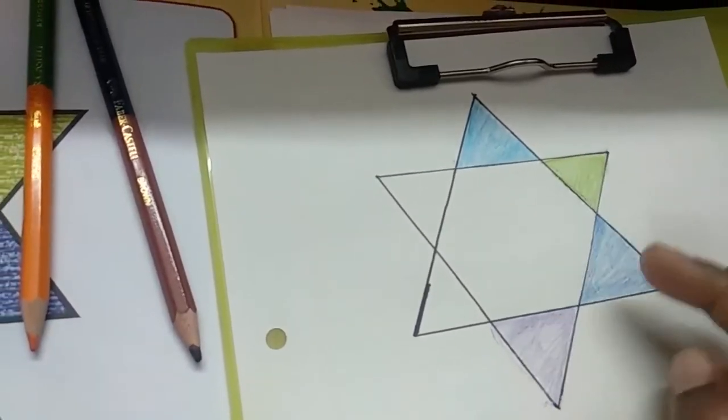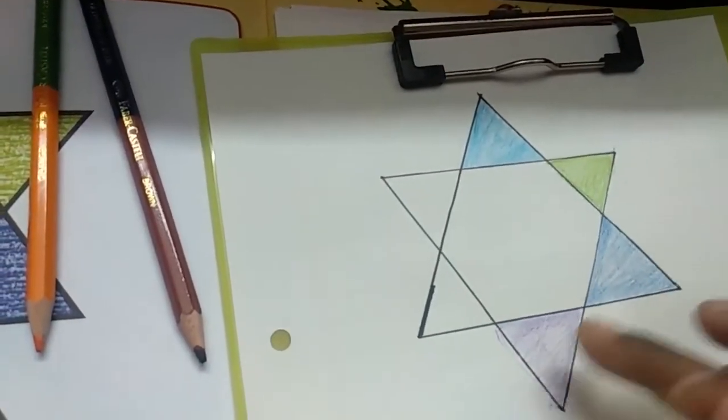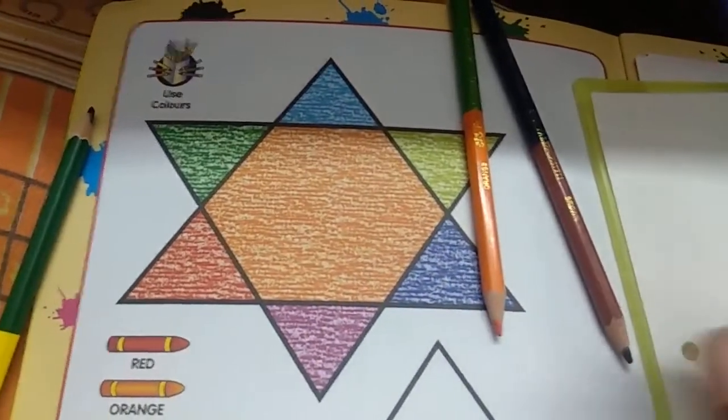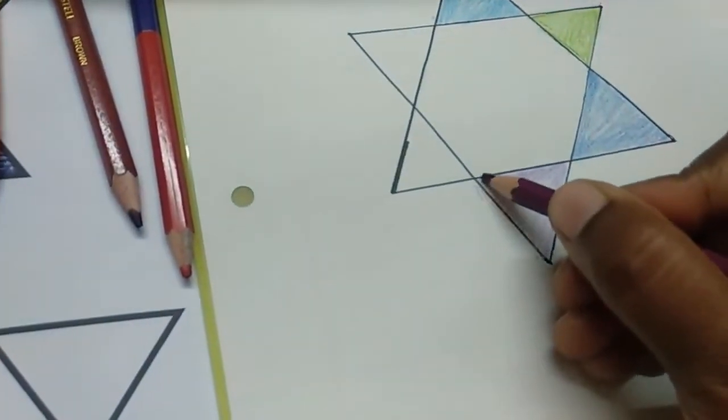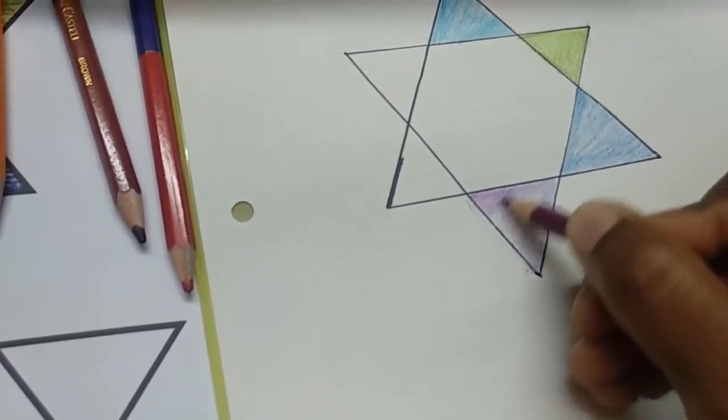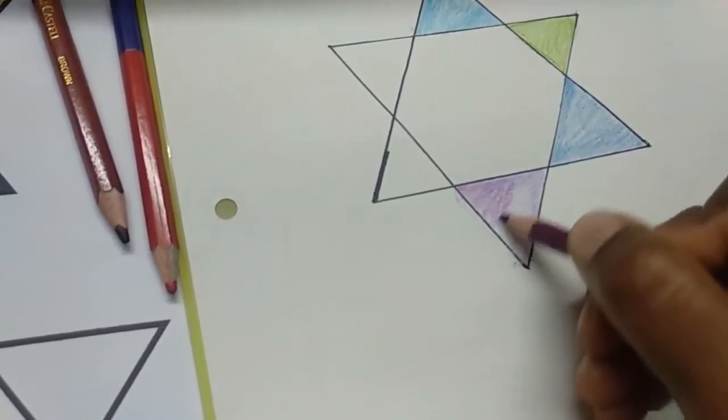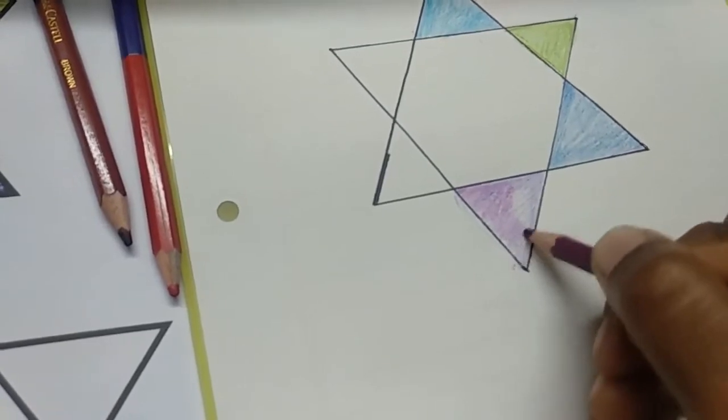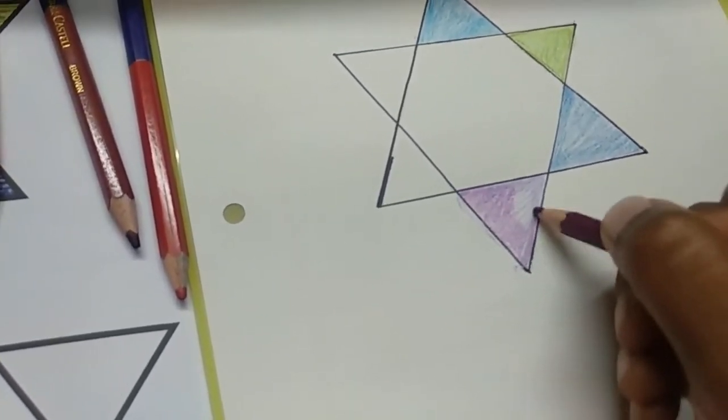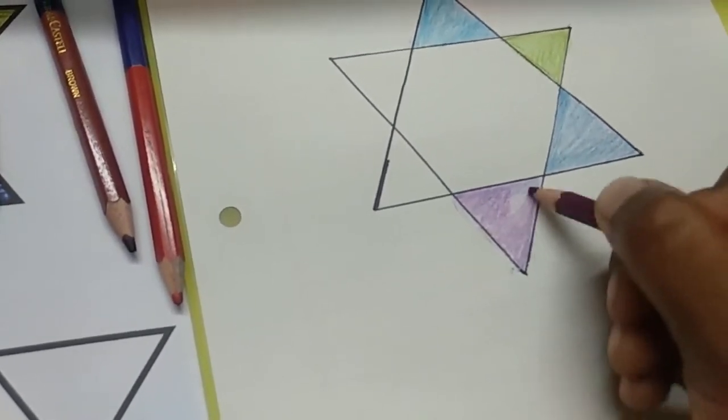So children, suppose you are not getting the perfect color. Like this here we are not getting the exact color, so we can mix the color. This color we can mix to get our complete color. But in your crayon colors you can get the proper color, so you don't need to mix any color. But here, as I am using the pencil color, I may not get the proper color.